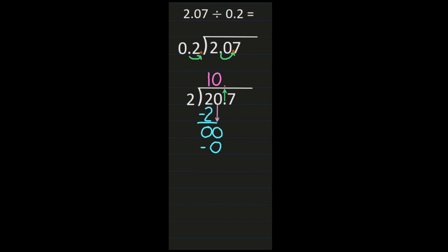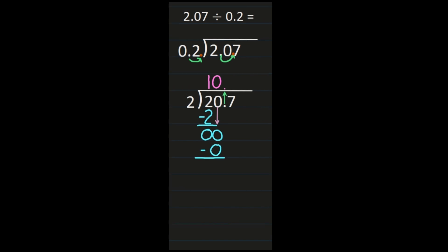I've divided, multiplied, and subtracted. My next step is to bring down if I have another number — and I have the 7, so I'm going to bring the 7 straight down. Then I'm at the division steps again. 7 divided by 2 is 3. 3 times 2 is 6. I've divided and multiplied, now I need to subtract: 7 minus 6 is 1.